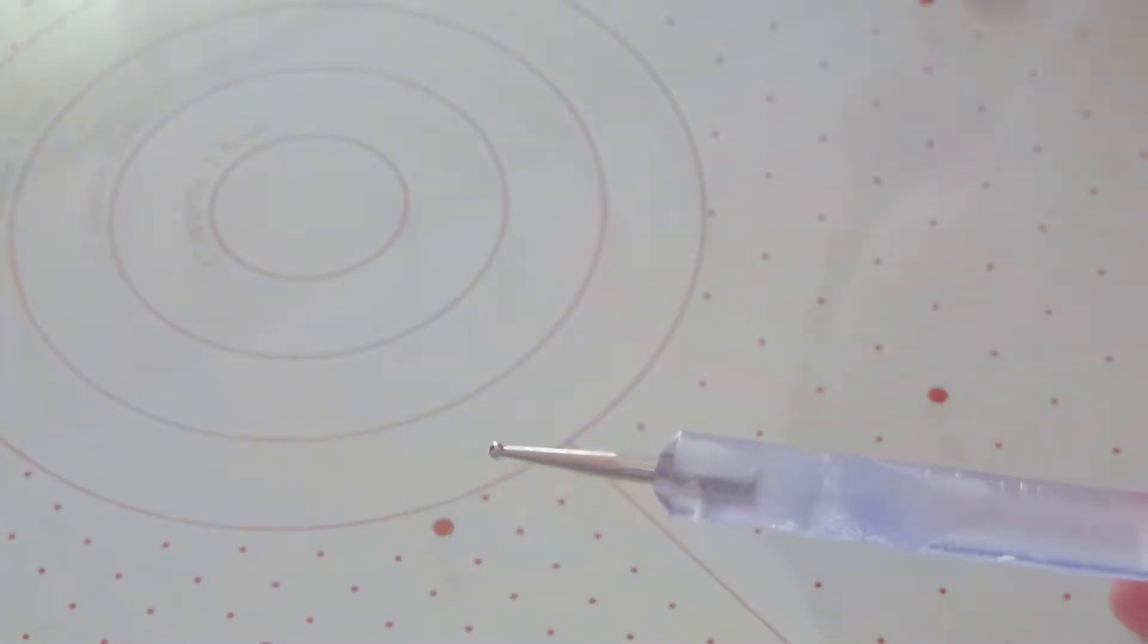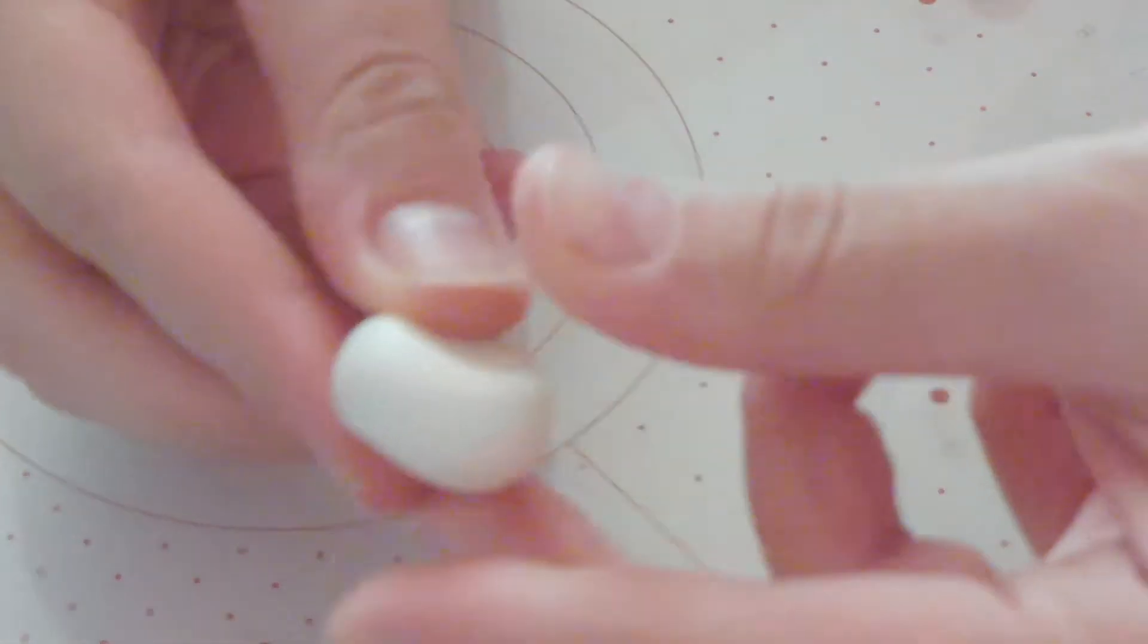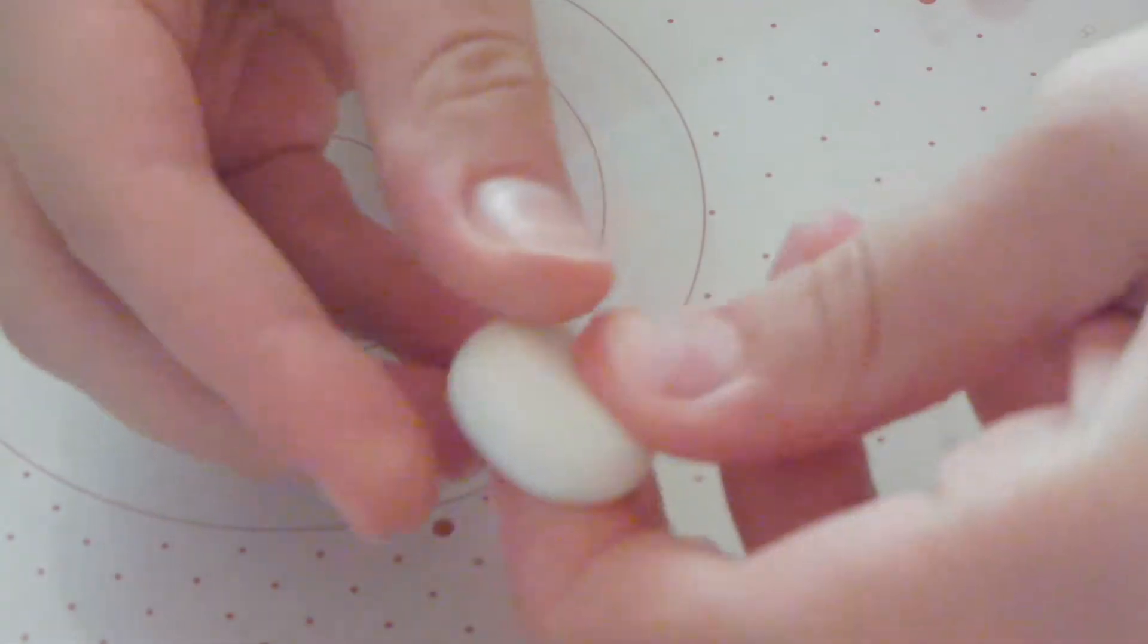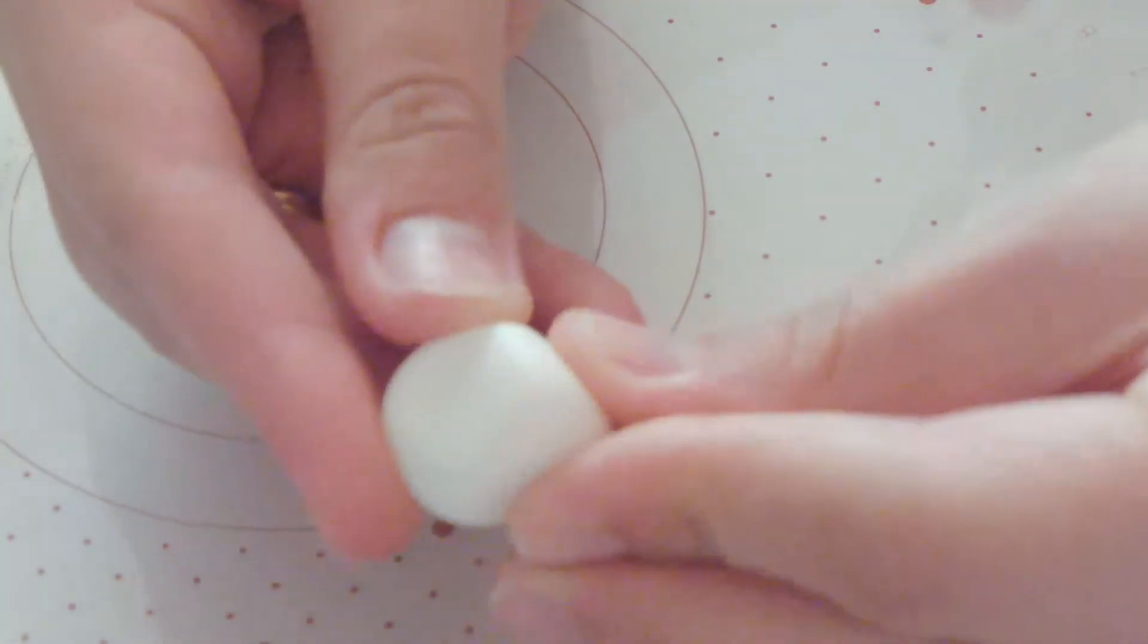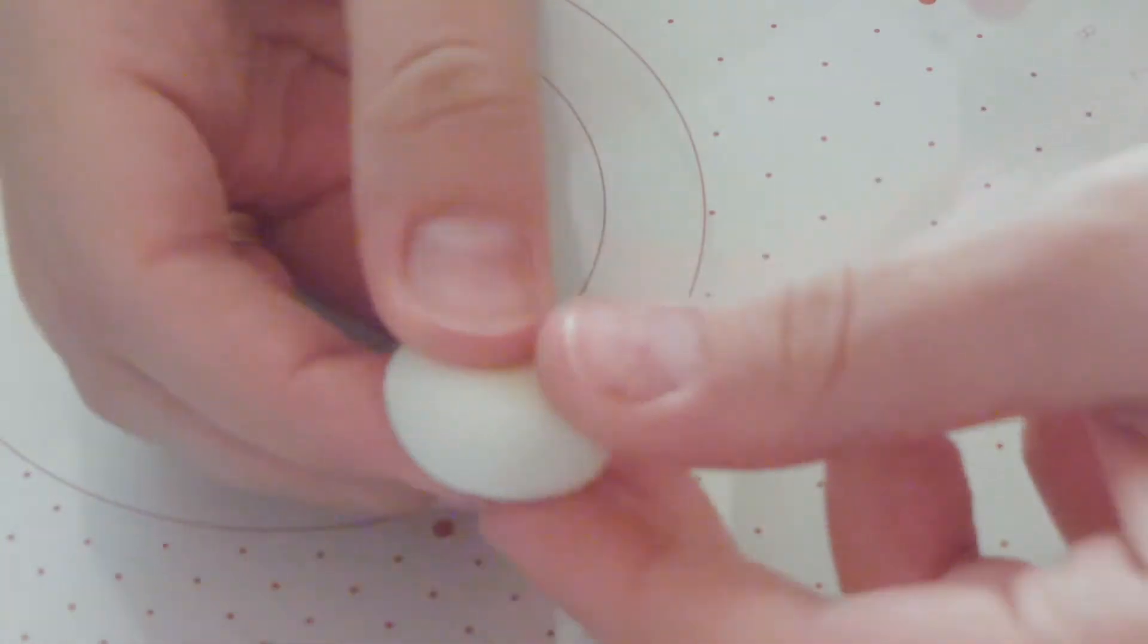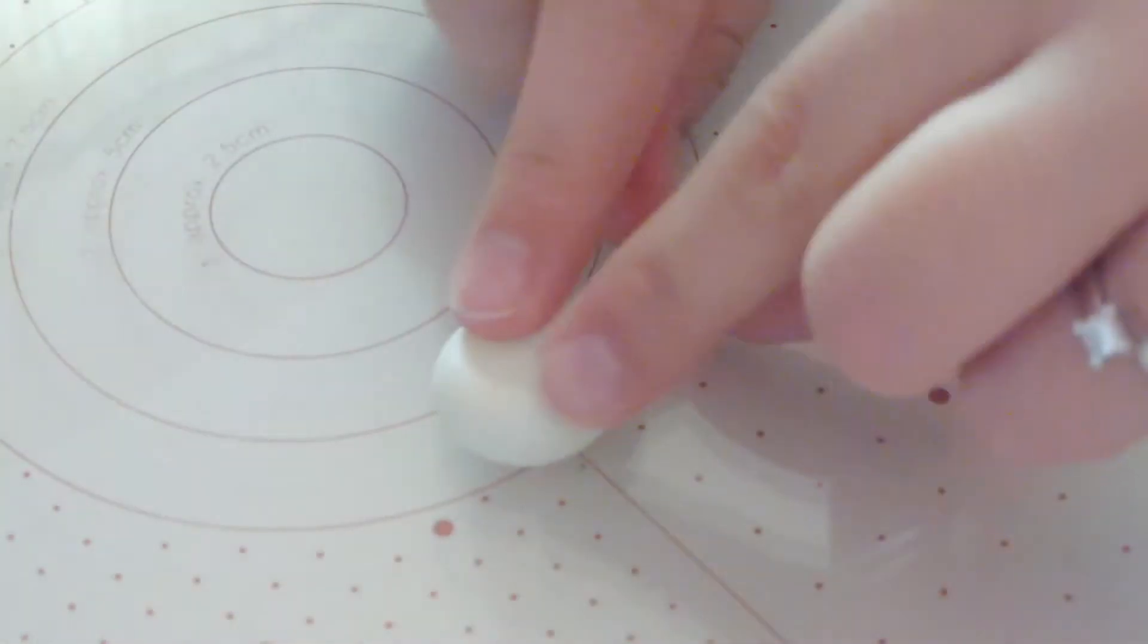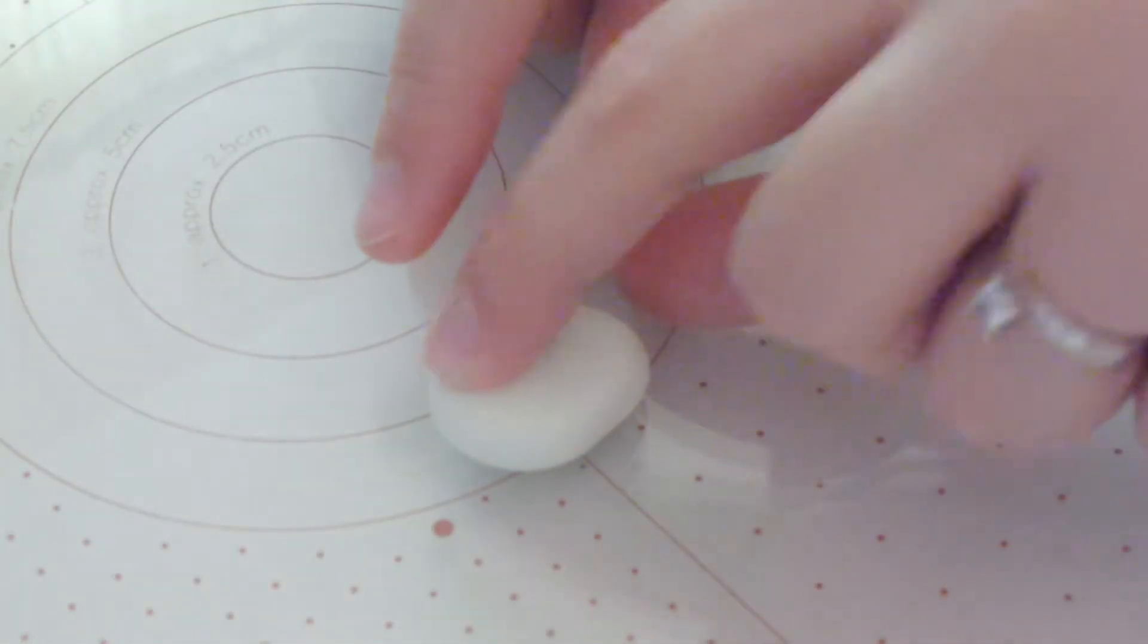Taking our clay, we're going to start pushing it down and pulling at one edge to create a point at the bottom. Roll the top, flatten one side, and pinch the bottom. I'm just flattening it and looking at the surface.